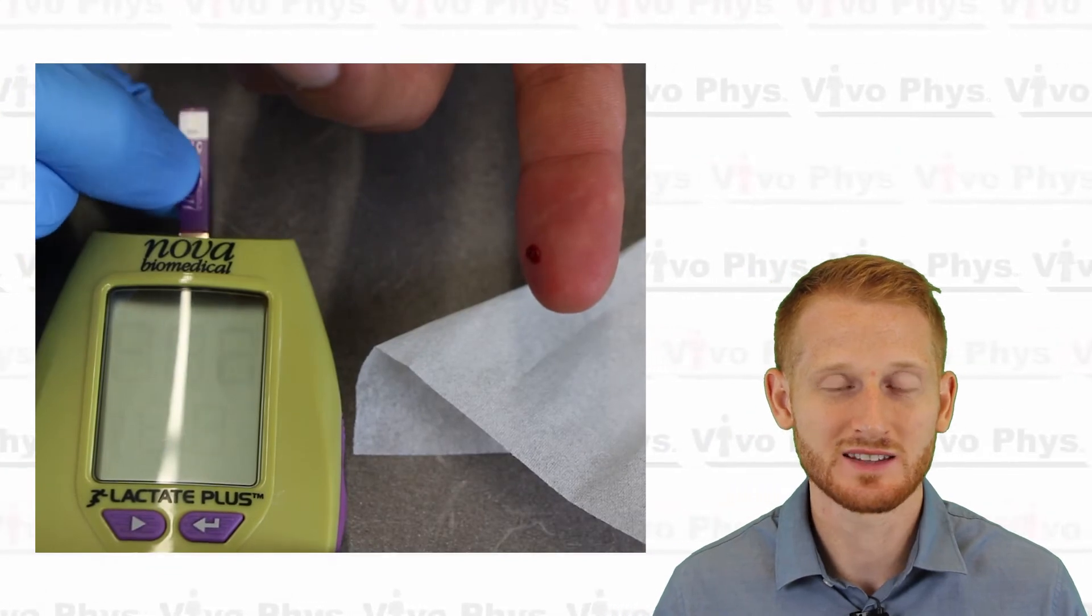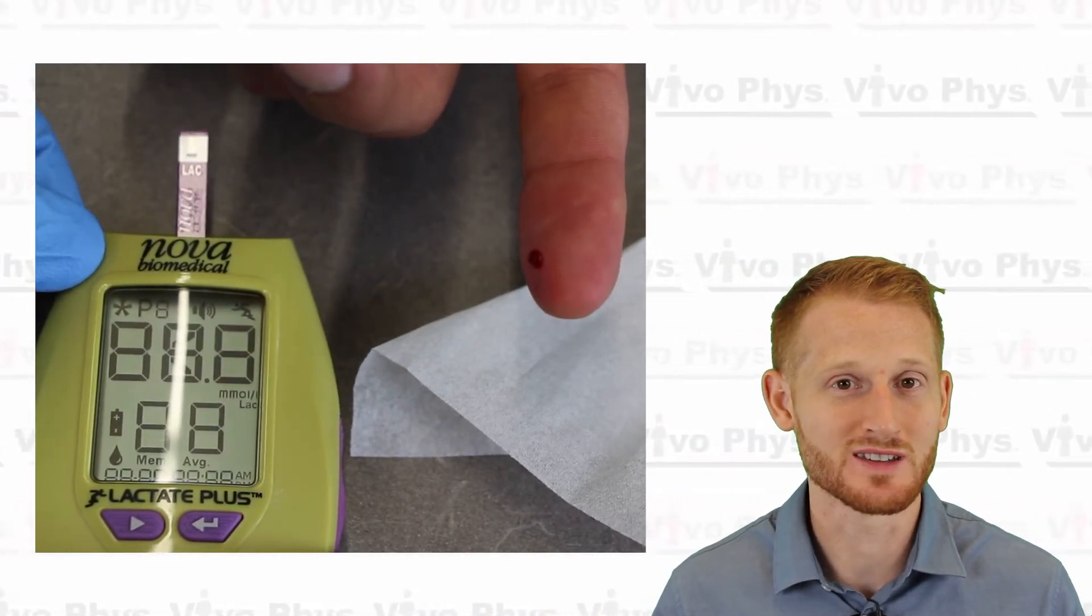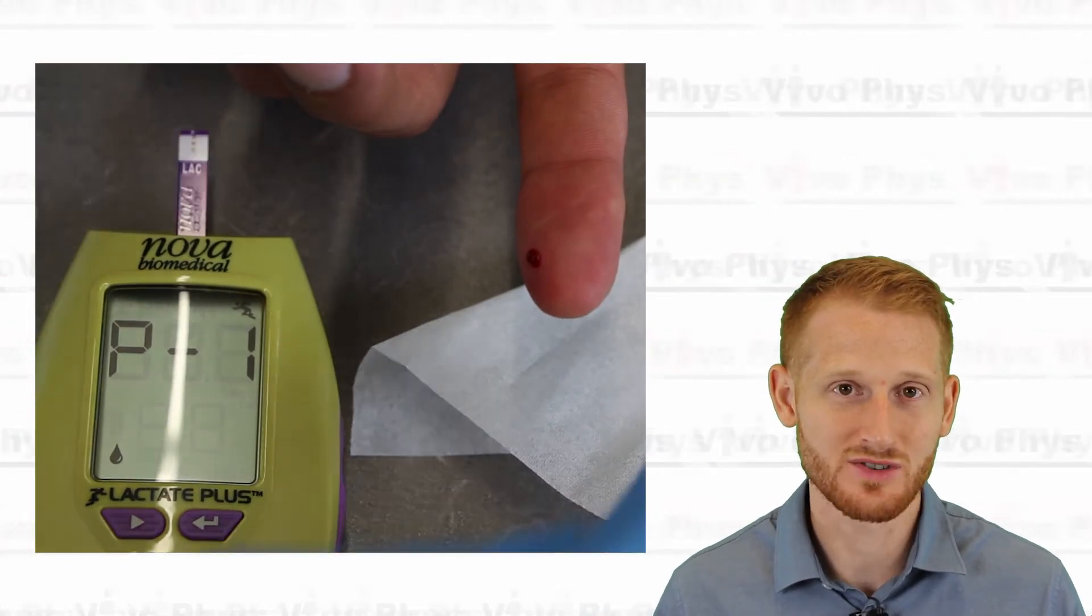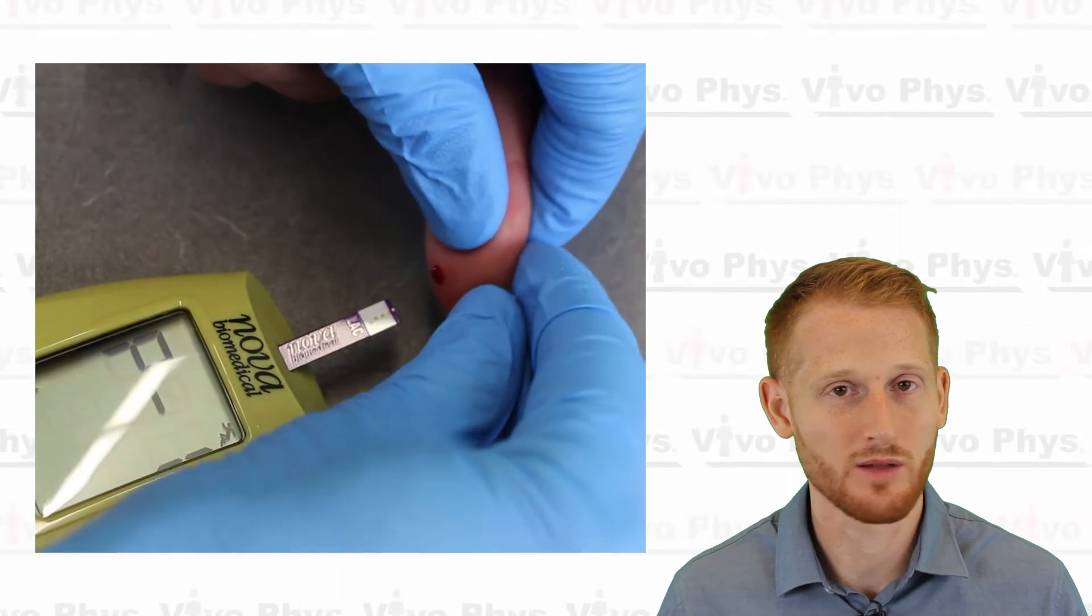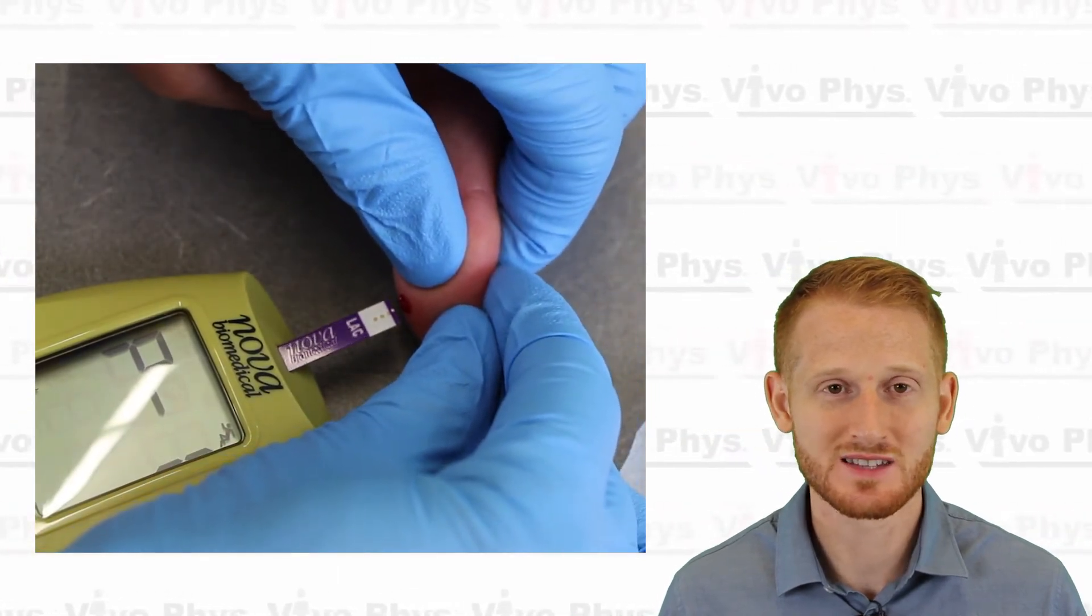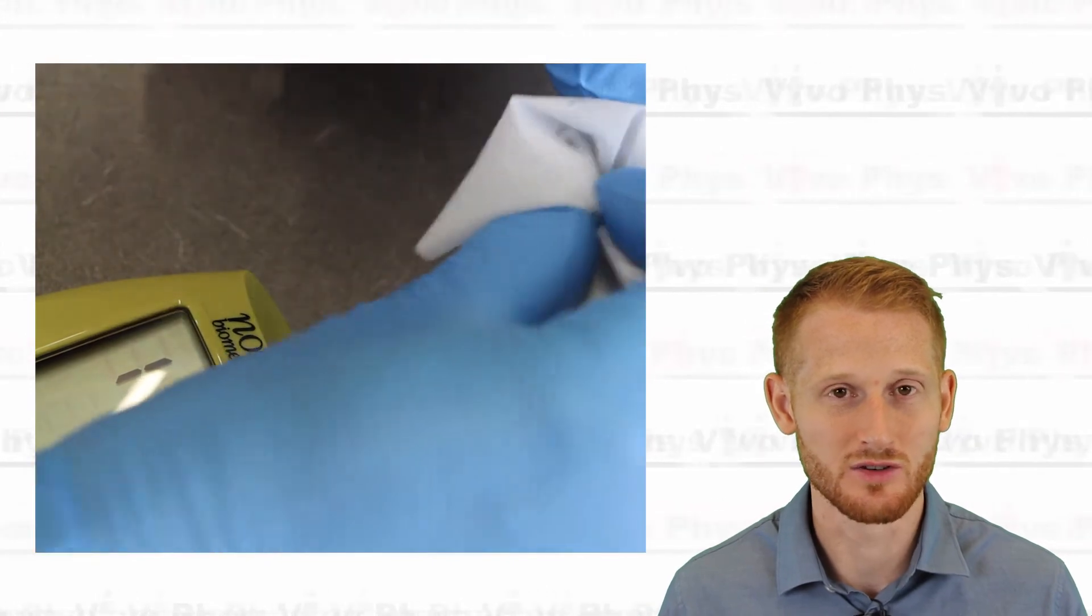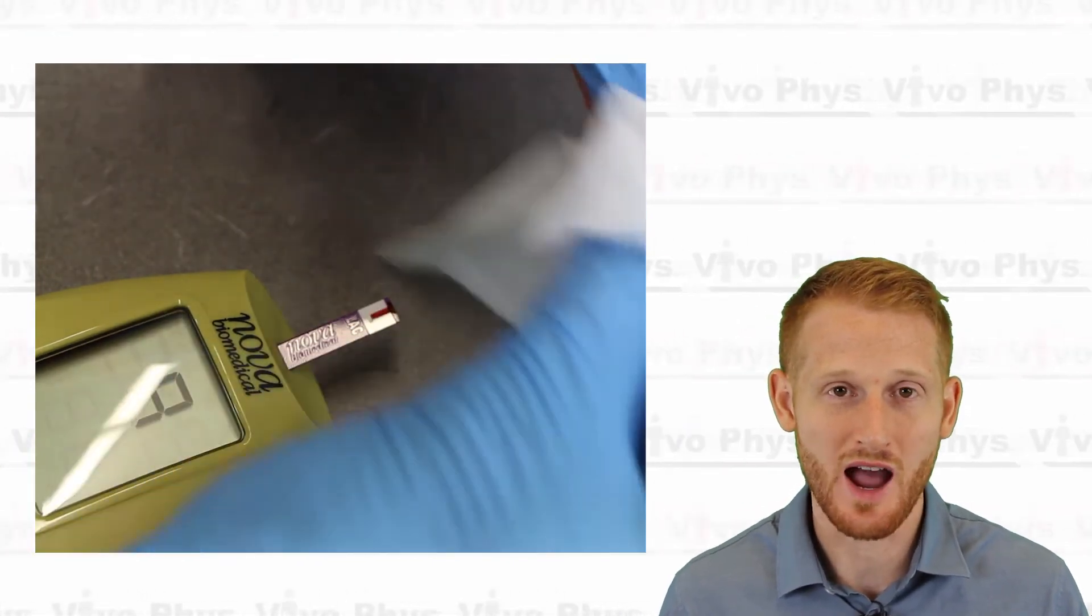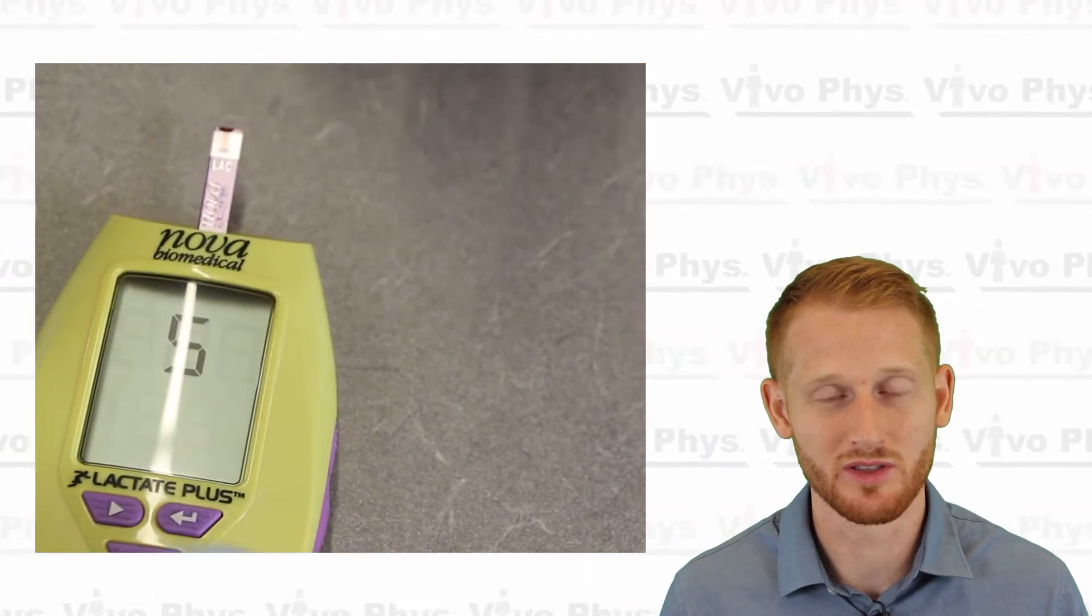Once you place it into the lactate analyzer, you're going to see that the screen turns on and that tells you that it's ready to be used. Once that screen is on, you do need to use that lactate strip within probably about 10 or 15 seconds. Otherwise, it's going to either turn off or deactivate. So make sure that you put the strip in after you have the drop of blood ready and that you immediately put it in contact with the drop of blood.